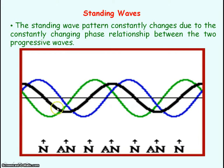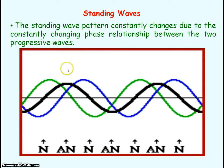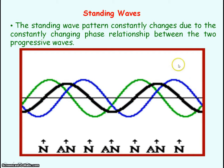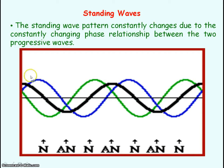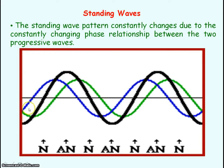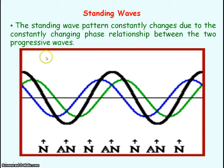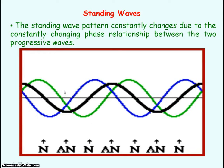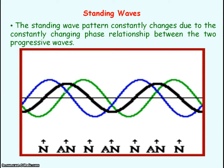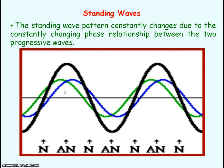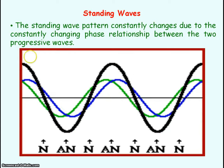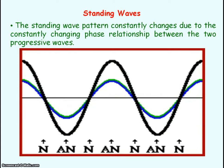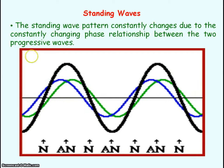It's called a standing wave or a stationary wave because the wave is not moving along. But the pattern is constantly changing because the phase relationship between the two progressive waves is constantly changing — going in phase, then out of phase, then back into phase and out of phase, and everything in between.